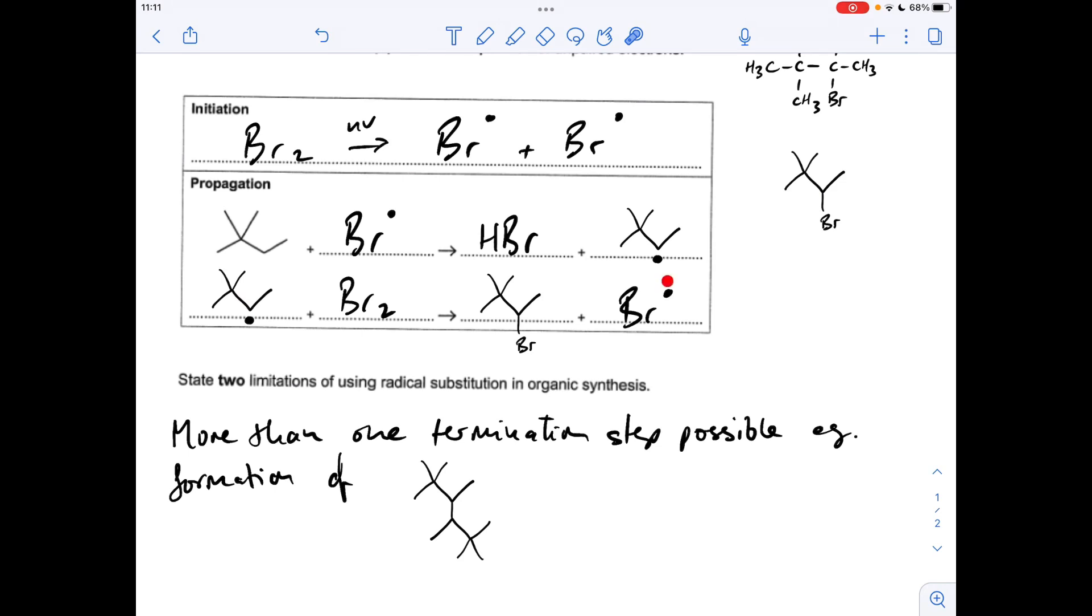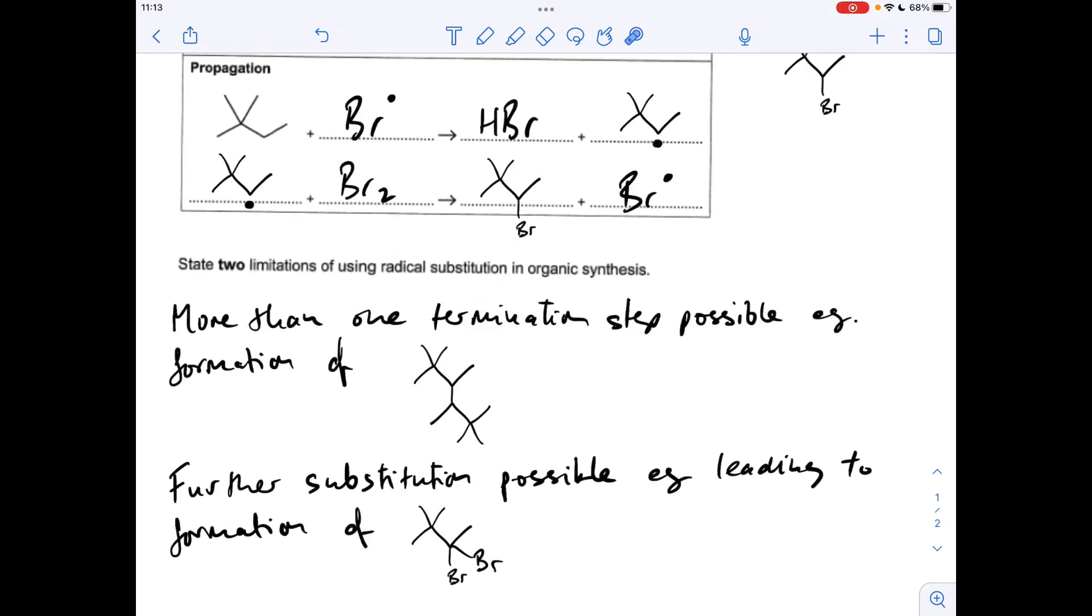Another reason you can give is down to the fact that bromine radicals are reformed in the second propagation step, and they could then start stripping out the next hydrogen and so on. So you get multiple substitutions occurring, which obviously would create dibromo, tribromo, etc. products, which is not this. So something like that: further substitution possible, for example, leading to the formation of the dibromo product.